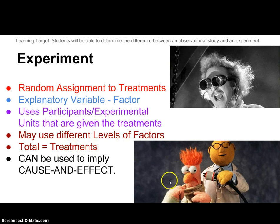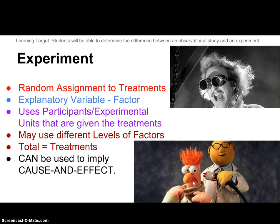All of those levels put together equals the total number of treatments. I've got scarf on and scarf off — that's two — and then 30 and 60 volts — that's a total of four different treatment levels that Beaker is going to have to endure in our experiment. Now, the important thing about an experiment is that if it is properly randomized — randomly assigned — and done using all the steps covered in the principles of experimental design, then we can, in fact, use a good randomized experiment to imply that there is a cause and effect relationship between two variables. Cause and effect can be implied by an experiment.